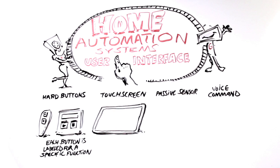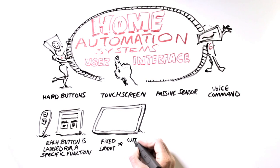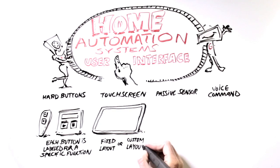Touch screen user interfaces use screens with touch-sensitive glass, like a smartphone. These interfaces have virtual buttons generated through software. There are two types of touch screen user interfaces.